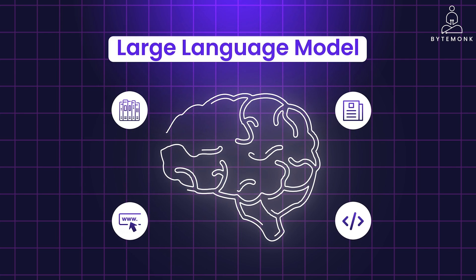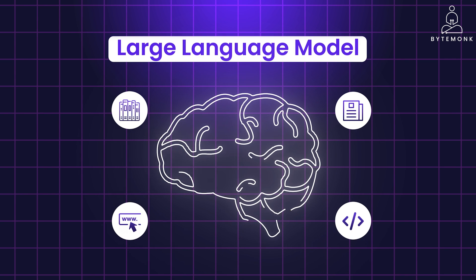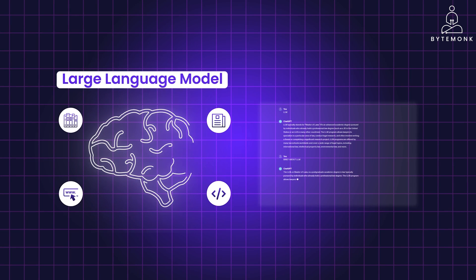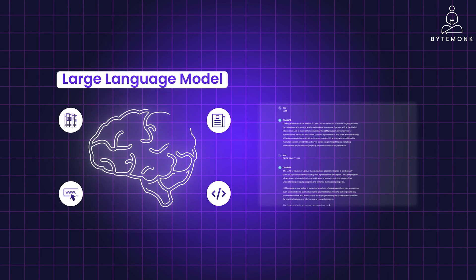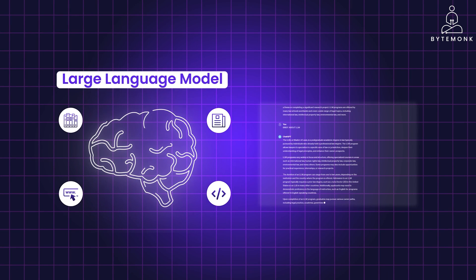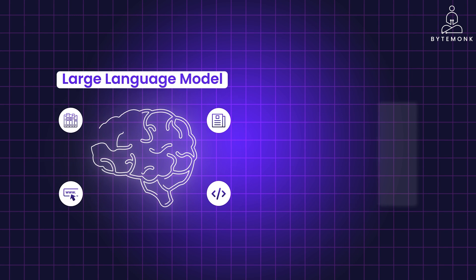This training helps the LLM understand how language works, the relationships between words, and even different writing styles. This allows them to process and generate human-like text, translate languages, write different kinds of creative content, and answer your questions in an informative way.